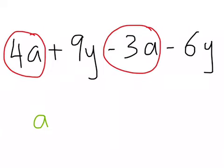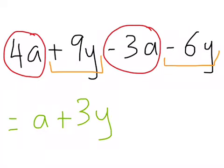And then the only thing I've got left is 9y - 6y. 9 - 6 gives me +3y. So that's the simplified version.